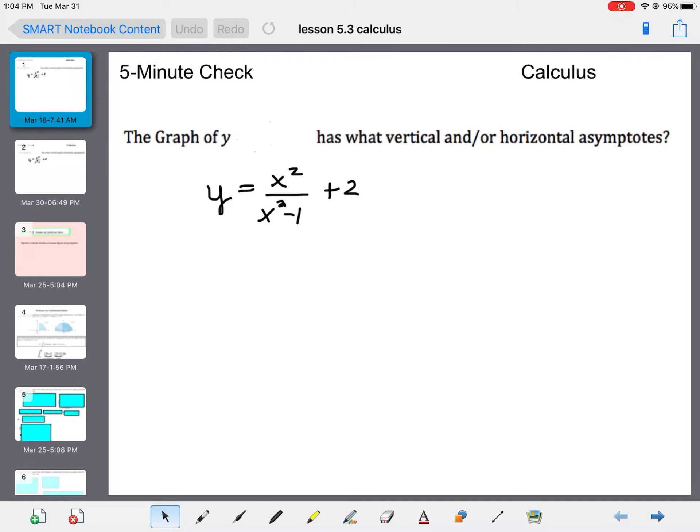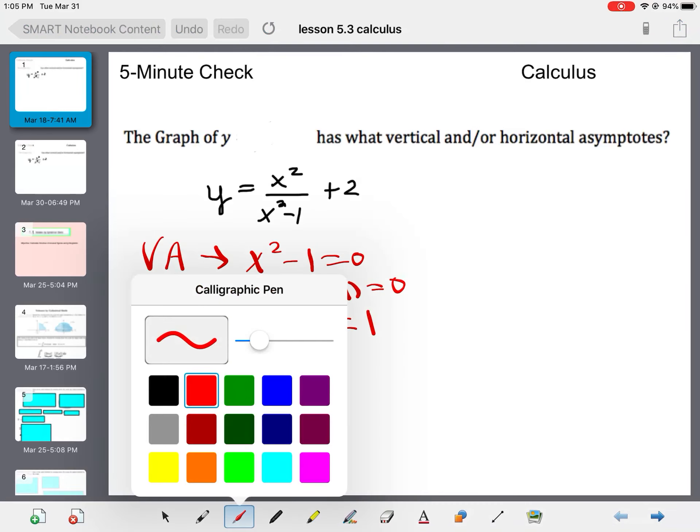So, it says the graph of Y has what vertical and horizontal asymptotes? So, let's remember those rules. Remember vertical asymptotes are for a rational function where the denominator equals zero. So, we're looking at where X squared minus one equals zero. Now, that's a factorable quantity or you can just solve it traditionally. And so, we get plus or minus one. There are vertical asymptotes.